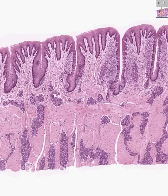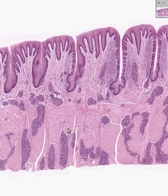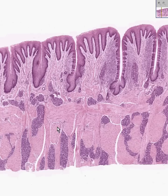You can absolutely identify this as another section of tongue for the same reason as our previous case of circumvallate papilla. You can see serous glands all throughout here — all these blue structures are serous glands. They're bluish and they secrete serous fluid.